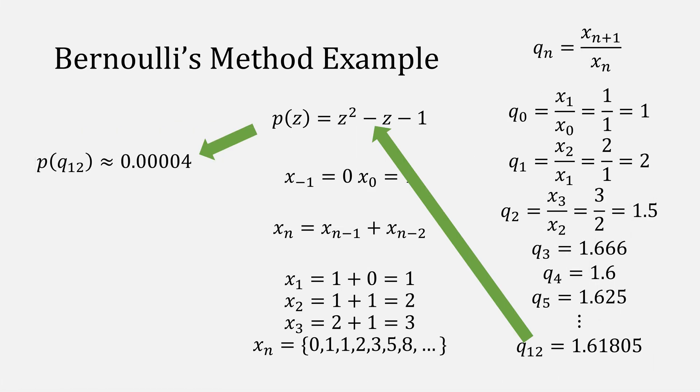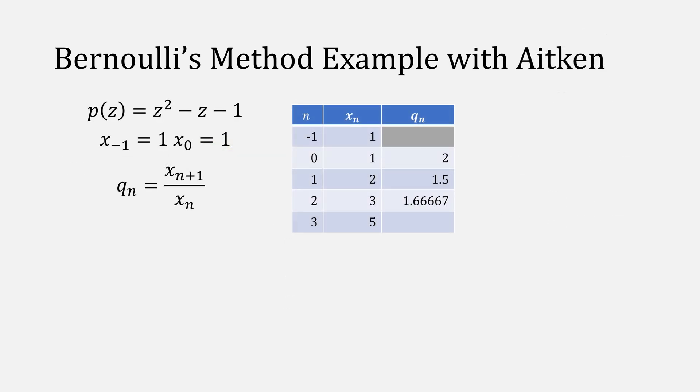Let us go back to our earlier example and try to speed convergence. Our first three values for q are 2, 1.5, and 1.6 repeating.